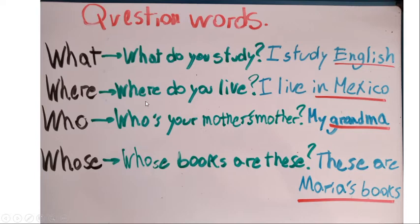Number two: 'where.' As I said before, the example is 'Where do you live?' The answer is Mexico, which is a place. We use 'where' to talk about places.